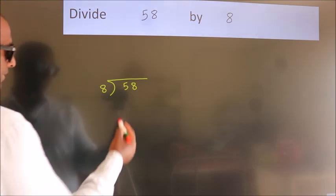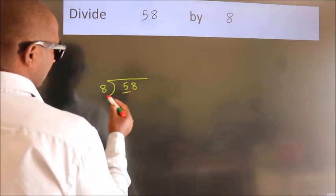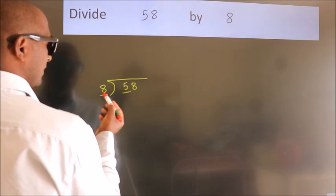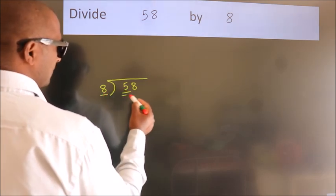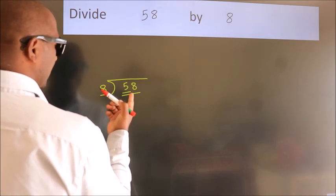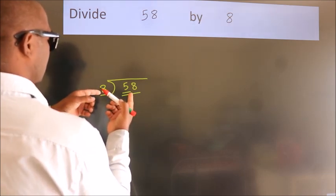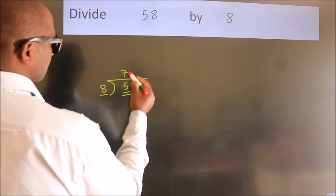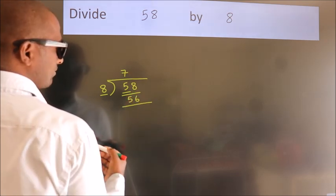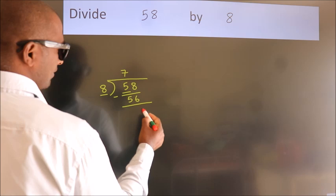Next, here we have 5, here 8. 5 smaller than 8. So we should take two numbers, 58. A number close to 58 in 8 table is 8 times 7, 56. Now we should subtract, we get 2.